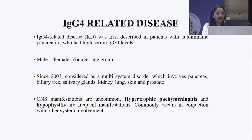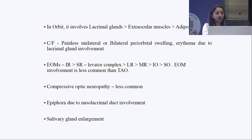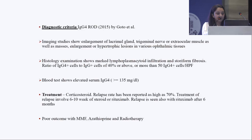In orbits, the lacrimal glands are most commonly involved, followed by the extraocular muscles and adipose tissue. Clinical features are painless unilateral or bilateral periorbital swelling due to lacrimal gland involvement in the supralateral quadrant. Compressive optic neuropathy is relatively less common. Diagnostic criteria is based on imaging and confirmed by histopathology. Blood tests showing elevated serum IgG4 levels add to the diagnosis.